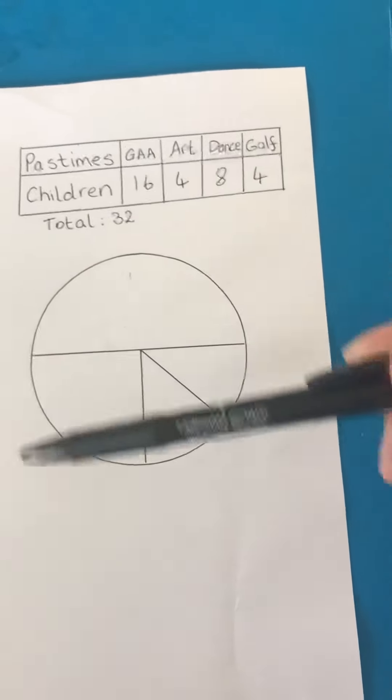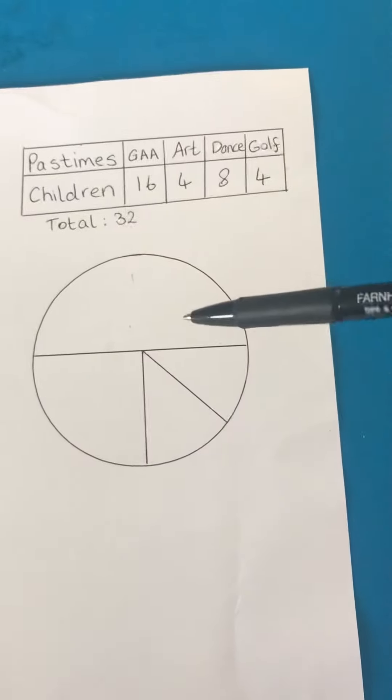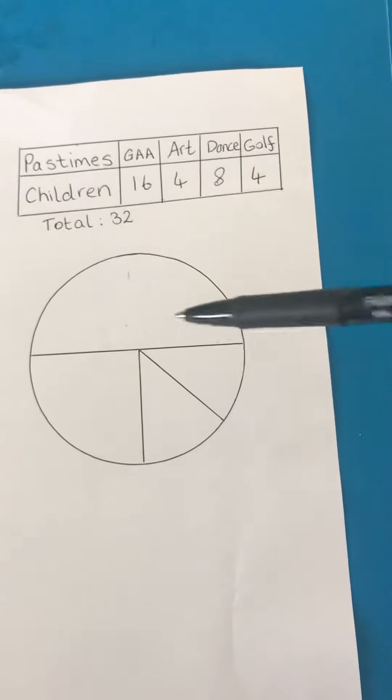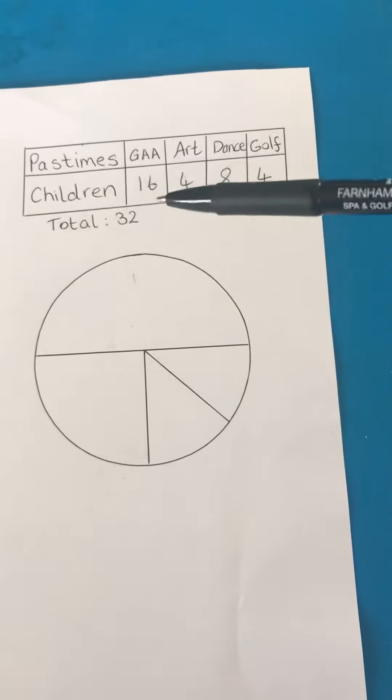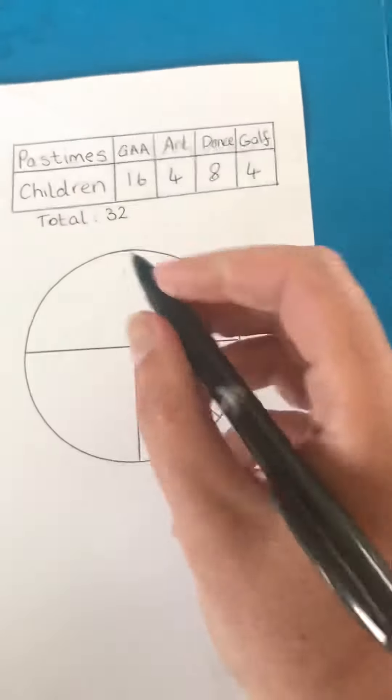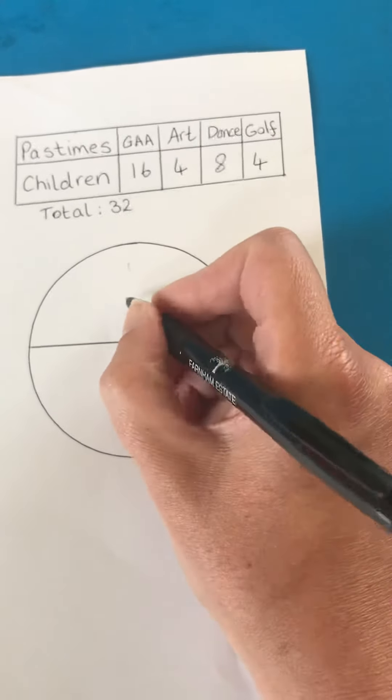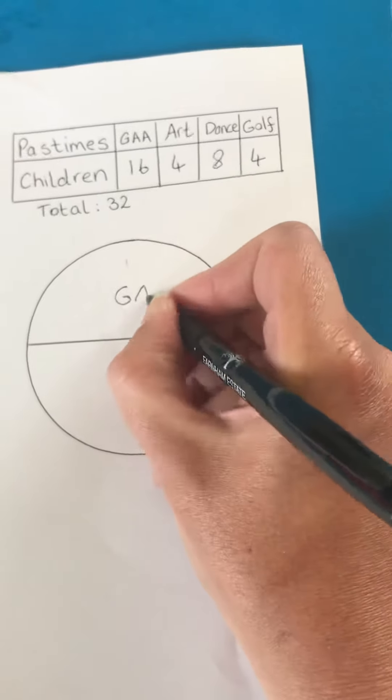I just used a sellotape roll to draw the circle and then I split it in half. If the total amount is 32 and half is 16, then this half of the circle or the half sector of the circle represents GAA.